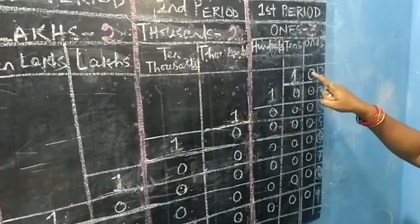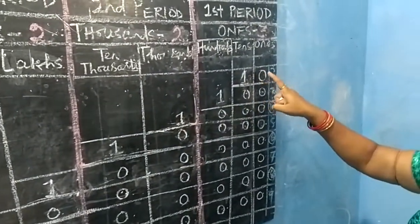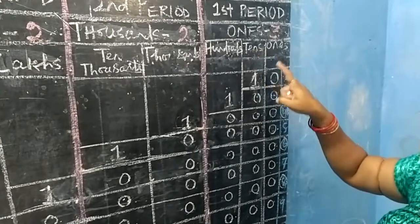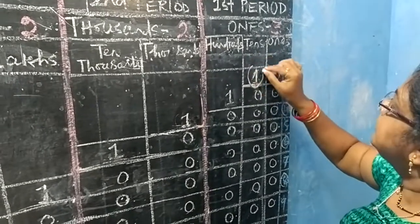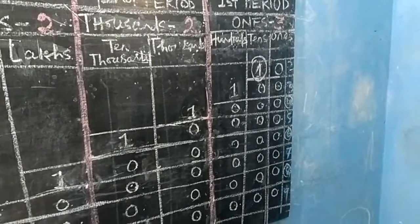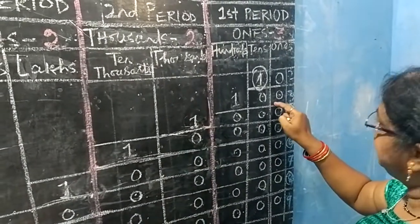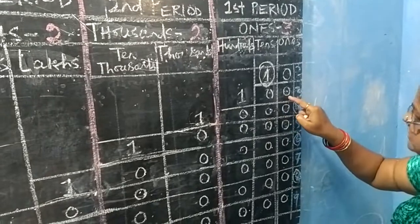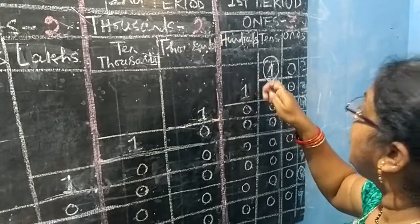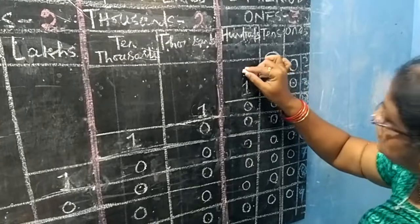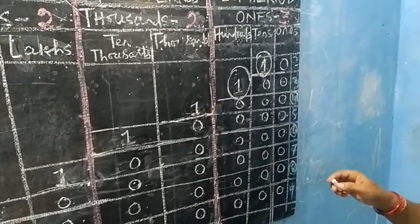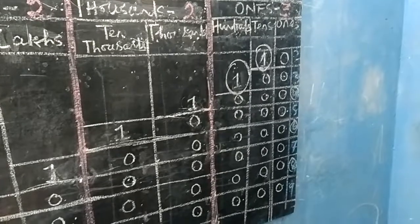Let us write a 2-digit number: 0 1s and 1 10s. Here, 1 is in the 10s place, so we can speak 10s. And for a 3-digit number: 0 1s, 0 10s and 1 100s. Here, the place value of 1 is 100s. We also speak 100s.